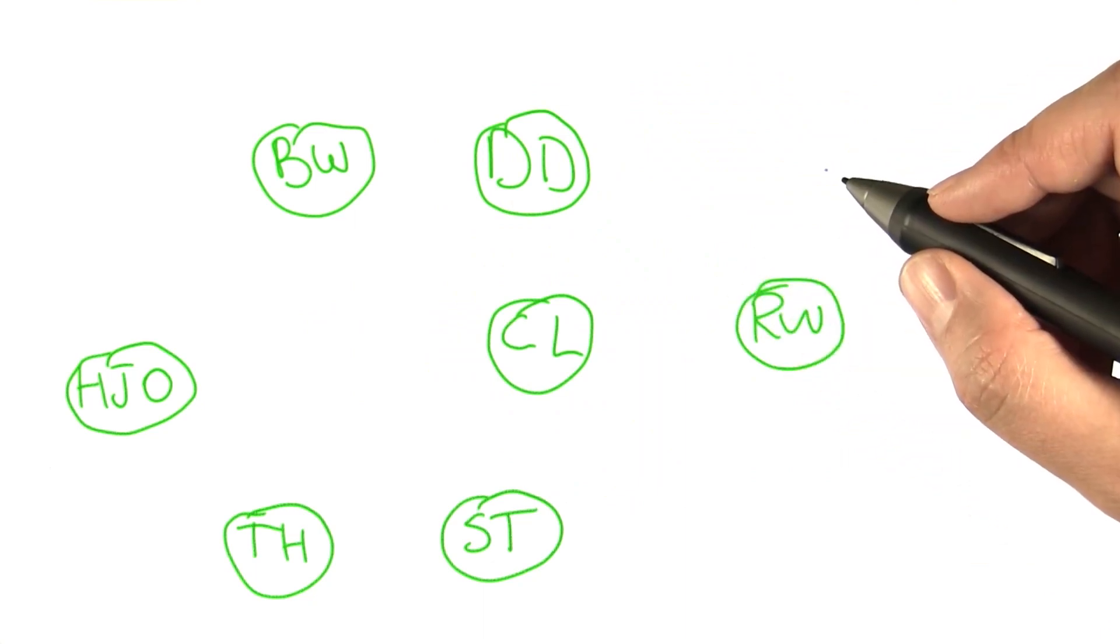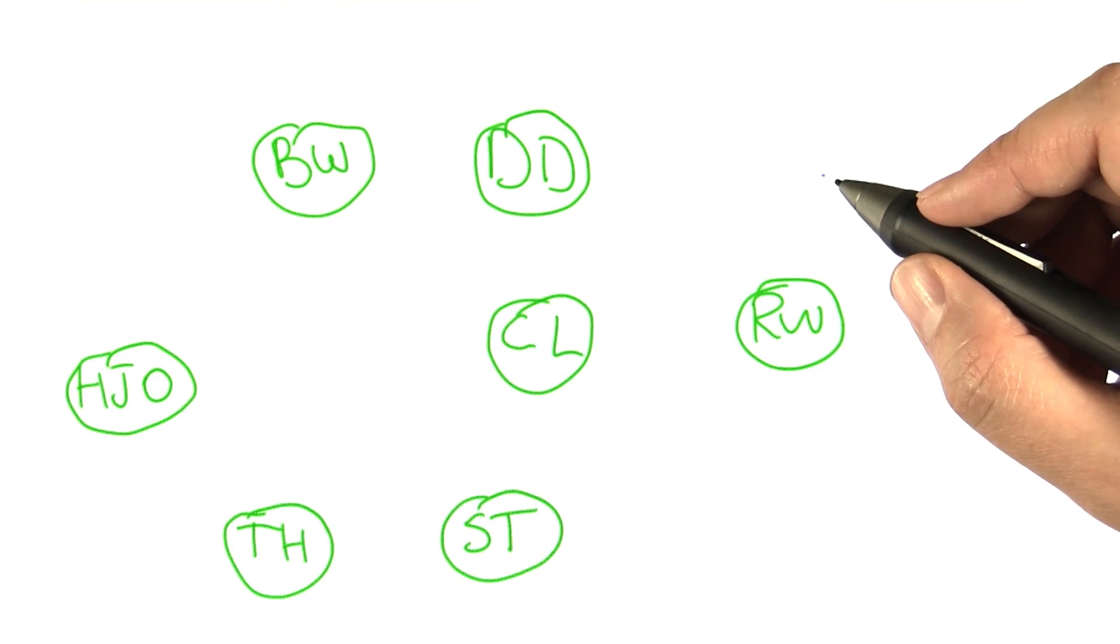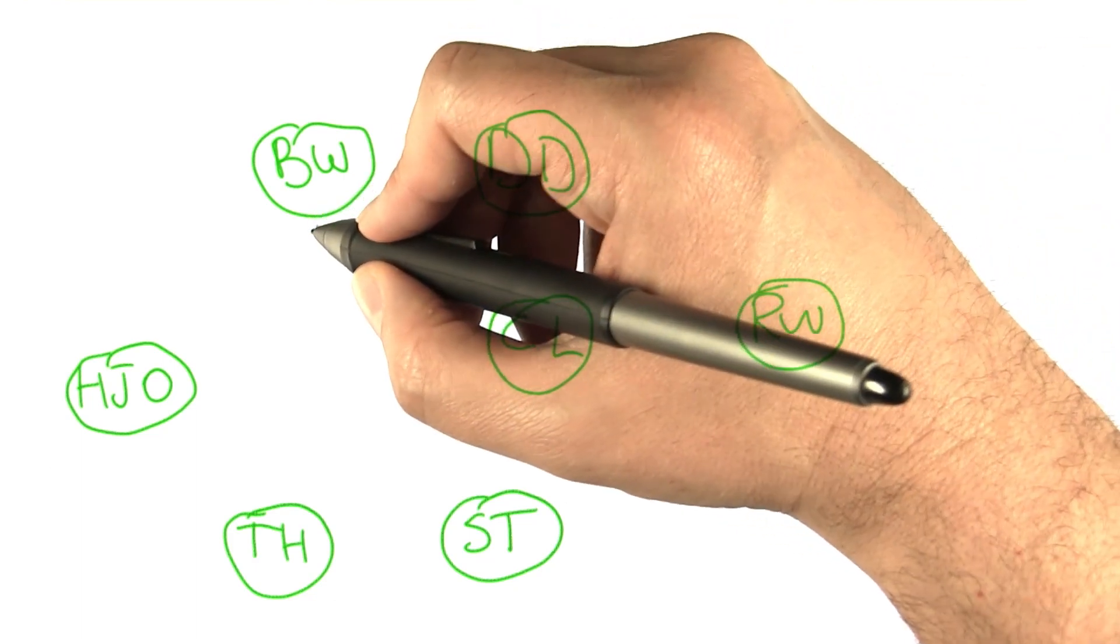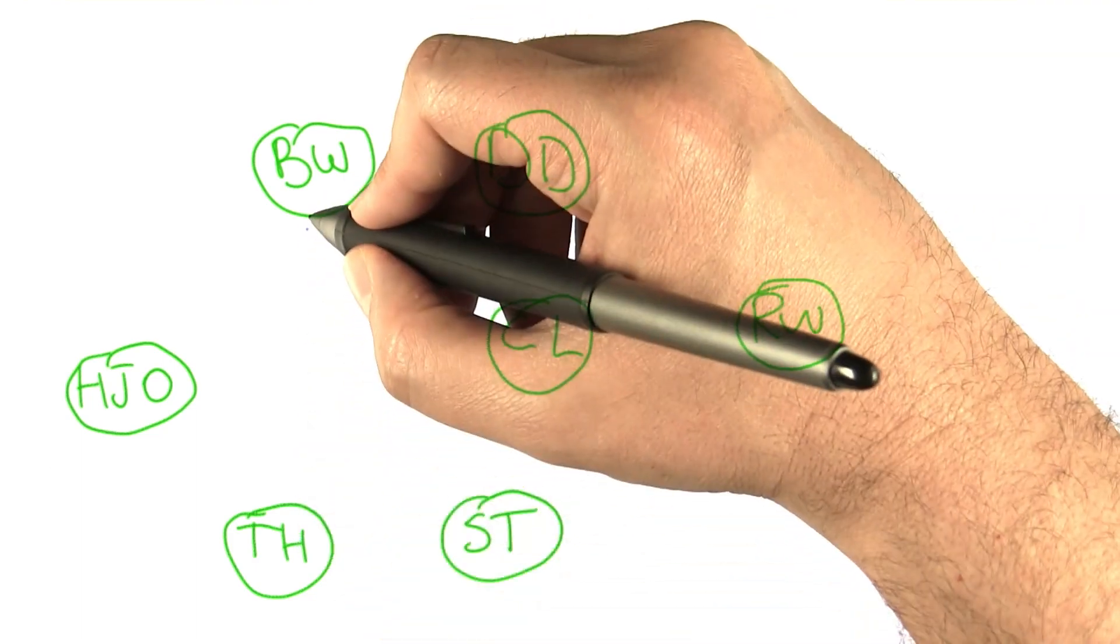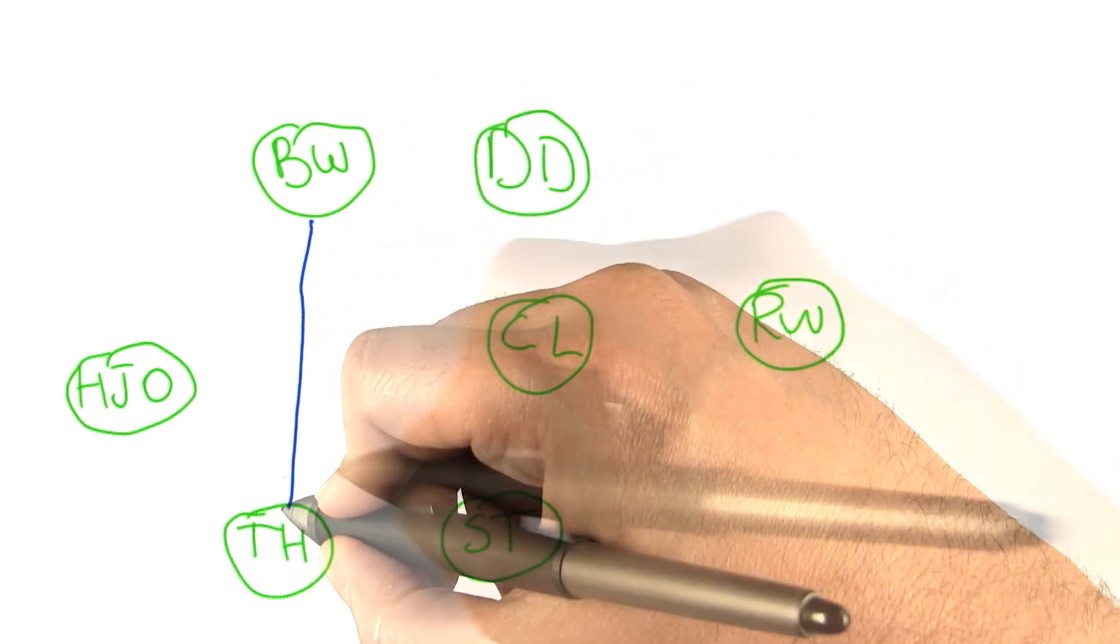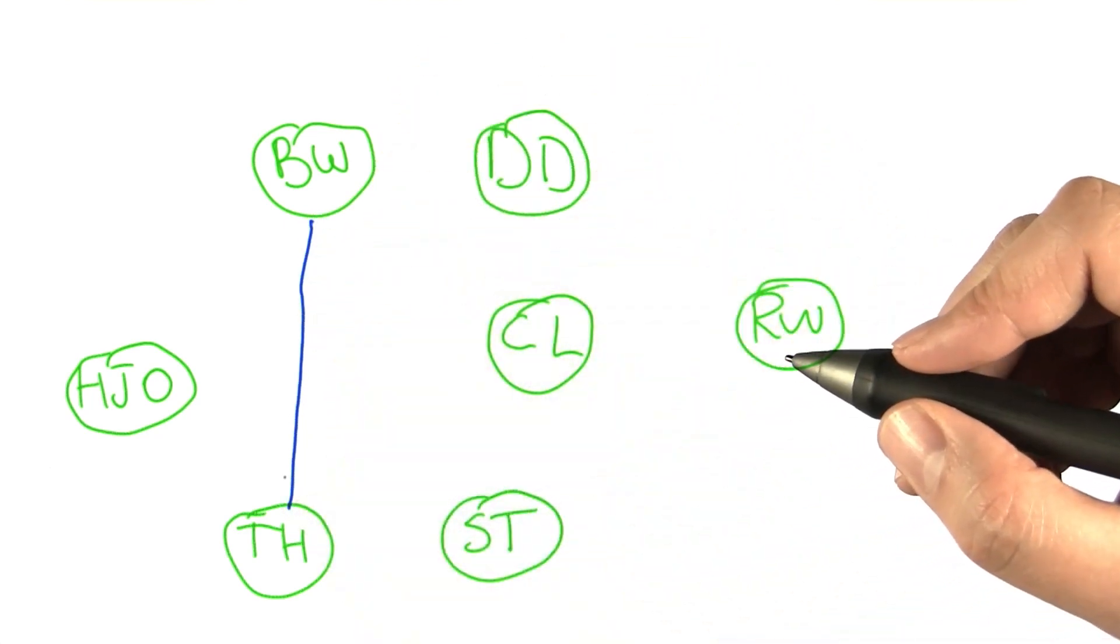I'm going to connect together actors who were in movies together with lines that represent those movies. So Bruce Willis and Tom Hanks were in a movie together called Bonfire of the Vanities. That seemed like it was going to be very good, but it was not.